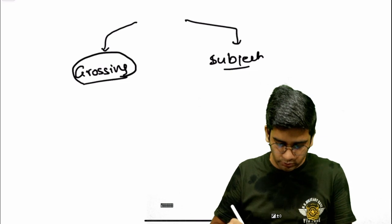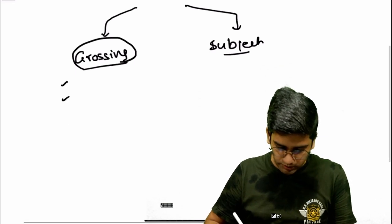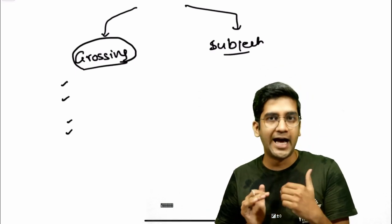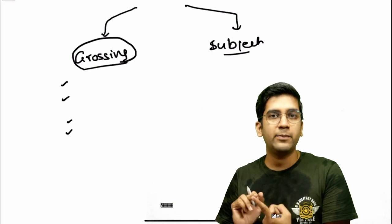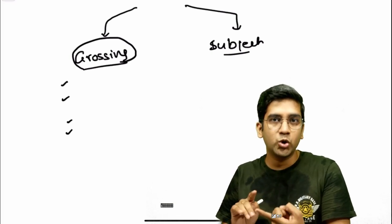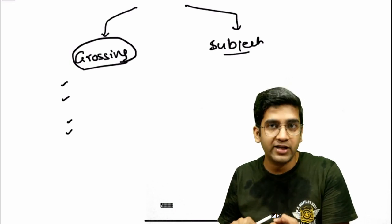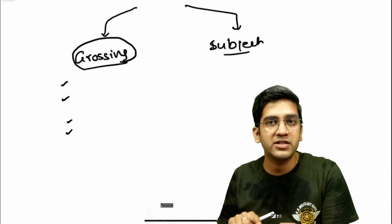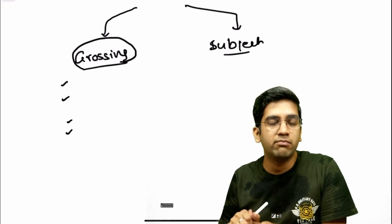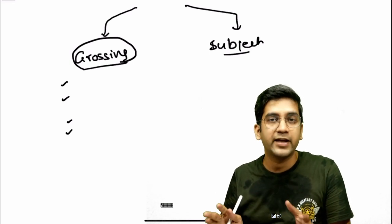So what I'll be doing in grossing module is, here I will do it organ system wise. Like as if you open the app now, you'll have breast pathology. Under the breast pathology, you'll have how to gross a lumpectomy, how to gross a core biopsy, how to gross a modified radical mastectomy, how to gross a nipple sparing surgery, how to gross a breast conservative surgery, everything. Everything will be there under that.